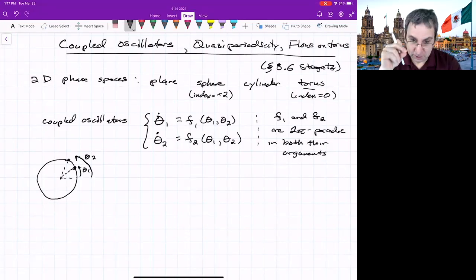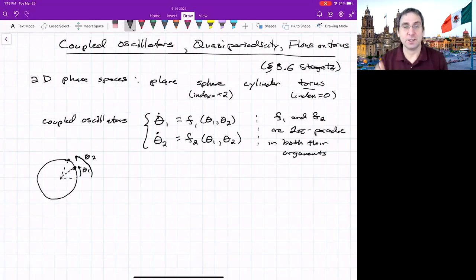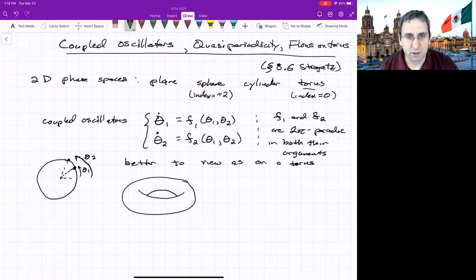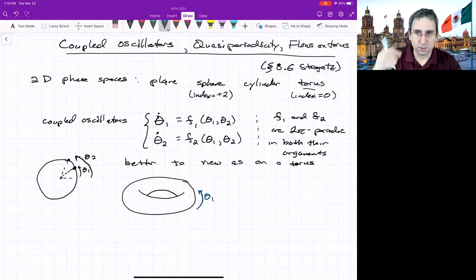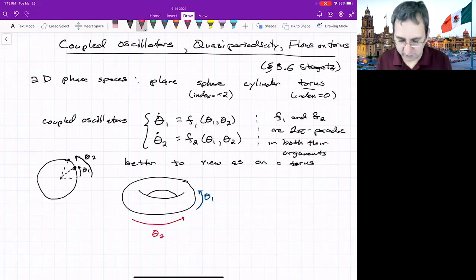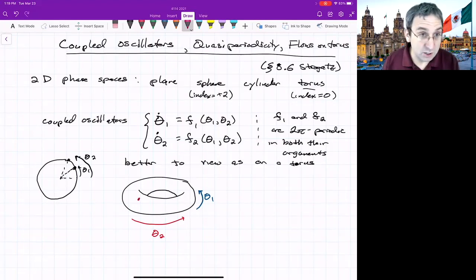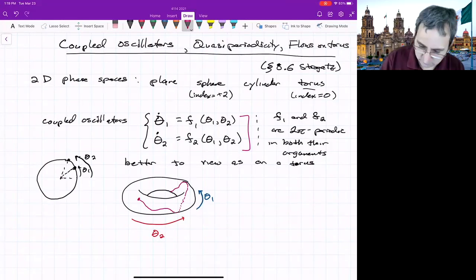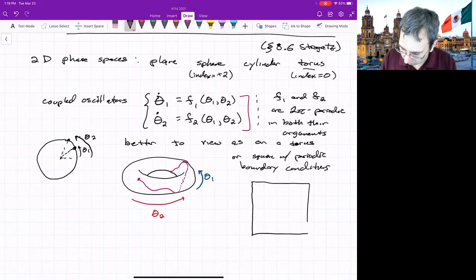But we would like to have a phase space point of view. So for a phase space point of view, we need a single point in our phase space. So we want a single point on a torus with coordinates theta one and theta two. The surface of a donut or a bagel or whatever your favorite torus shaped food item is. So we can define on this a coordinate system. Theta one goes around that way and theta two goes around that way.